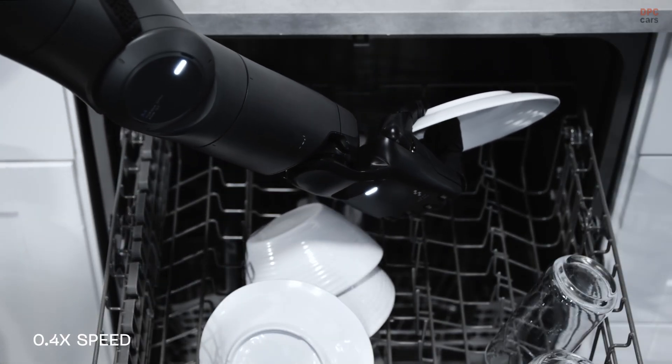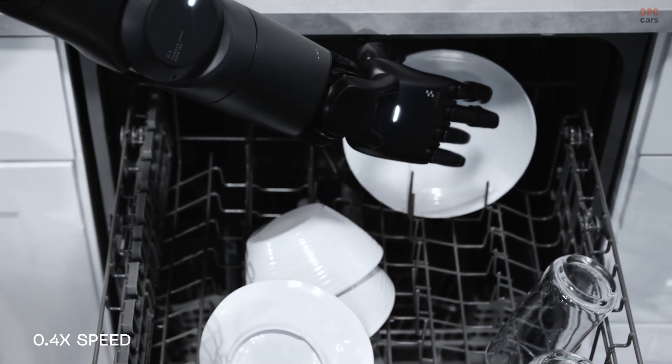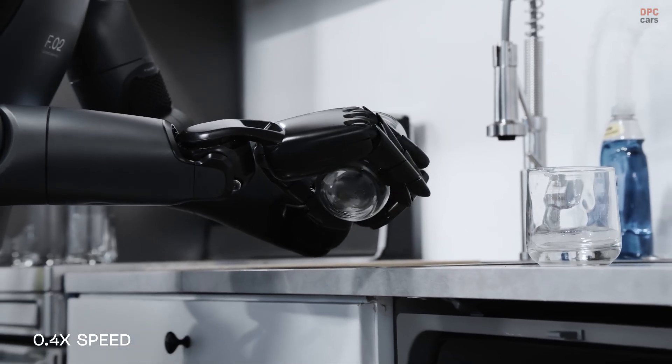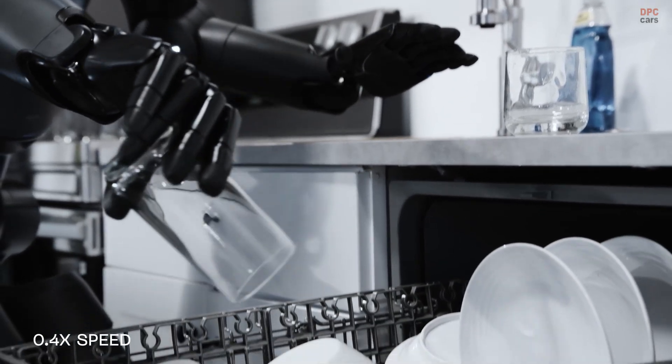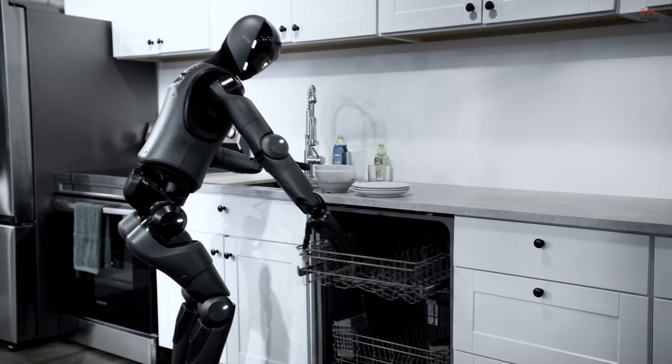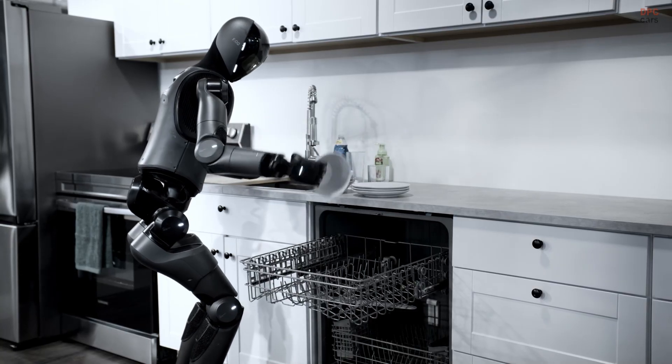What stands out is the hands. Finger pressure eases on delicate glass, tightens on a heavy bowl, and resets when a part slips. You can almost see the learning loop at work. Look. Decide. Try. Adjust. The small corrections are the story. They are the difference between a stage tutorial and a helper you welcome into the kitchen tomorrow.